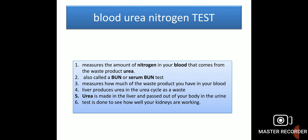The blood urea nitrogen (BUN) test, also called the serum BUN test, measures the amount of nitrogen in your blood that comes from the waste product urea. It measures how much of this waste product you have in your blood. The liver produces urea in the urea cycle as a waste product. Urea is made in the liver and passed out of the body in the urine. The BUN test is done to see how well your kidneys are working.